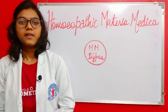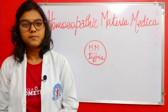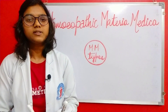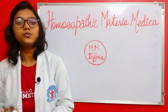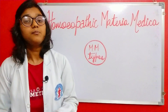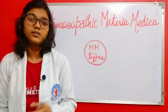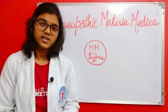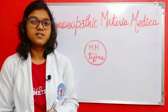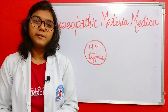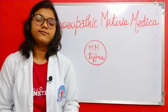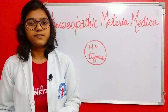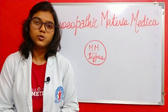Since the time of Hahnemann, there have been many advancements in homeopathy. From that time to now, we have known more than 4000 drugs, and to explain the pathogenesis of these drugs, there have been more than 300 books framed on the topic of homeopathic materia medica. In Hahnemann's time, we only knew 128 drugs, and materia medicas were framed to explain the pathogenesis of those drugs. Now we know more than 4000 drugs, and many books have evolved to explain the pathogenesis of those drugs.